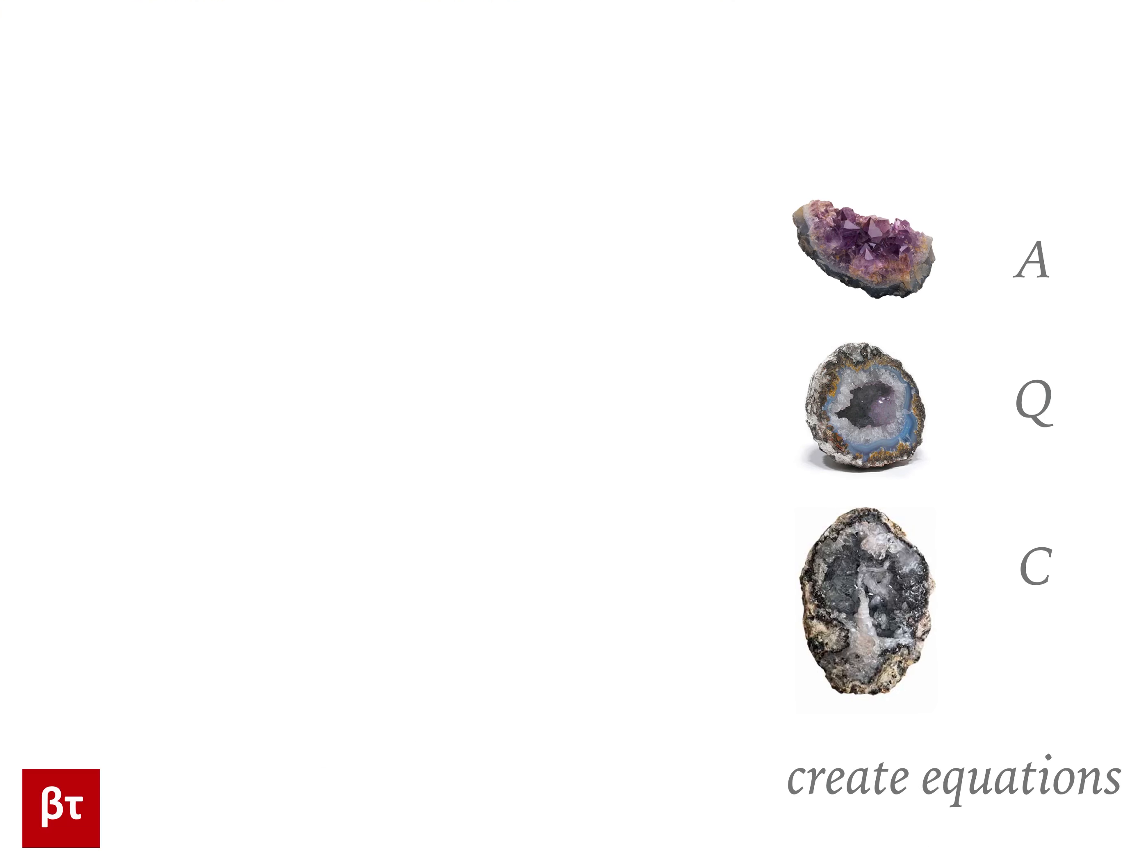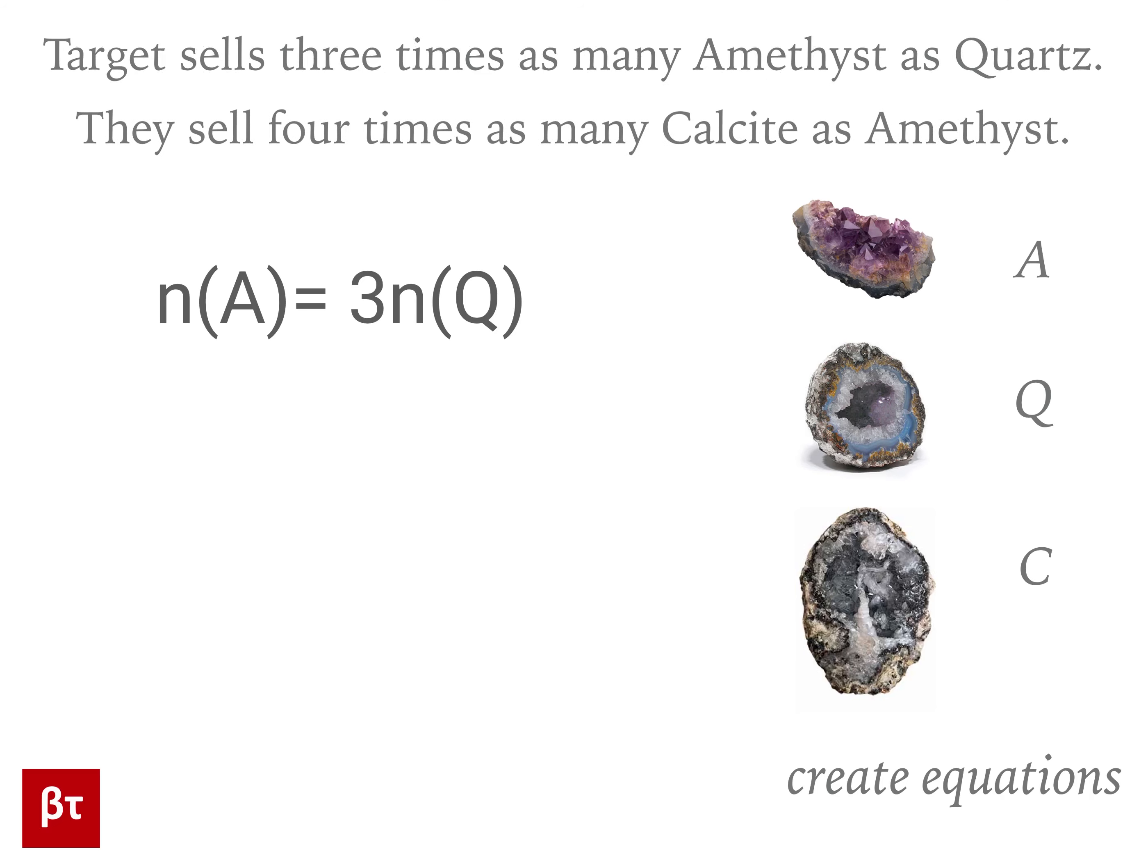Back to writing our equations. We're also told that the number of amethysts sold is three times the number of quartz. We can write this as the size of A equals three times the size of Q. And we're told that the number of calcite sold is four times the number of amethyst. That translates to the size of C equals four times the size of A.